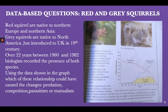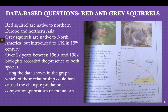The first data-based question is about red and gray squirrels, which you need to solve from your book. Red squirrels are native to northern Europe and northern Asia; gray squirrels are native to North America but were introduced to the UK in the 19th century. Between 1960 and 1982, biologists recorded the presence of both species. Using the data shown in the graph, which relationship could have caused the changes — predation, competition, parasitism, or mutualism? The data shows that as the gray squirrel presence increased over the years, the red squirrel presence decreased.